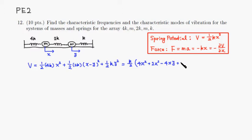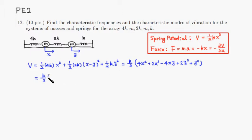Adding the last term gives plus 2y squared plus y squared. Collecting everything together, the total spring potential is V = (k/2)(6x² − 4xy + 3y²).